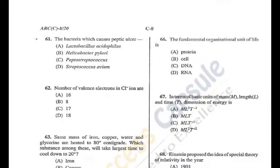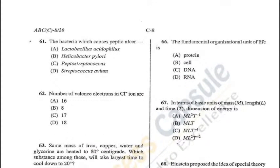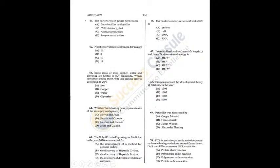Question 61: The bacteria which causes peptic ulcers is Helicobacter pylori — B is the correct answer. Question 62: Number of valence electrons in the chlorine ion — the electronic configuration of chlorine is 2, 8, 7, but the chloride ion has 8 valence electrons in its outermost shell — B is the answer.